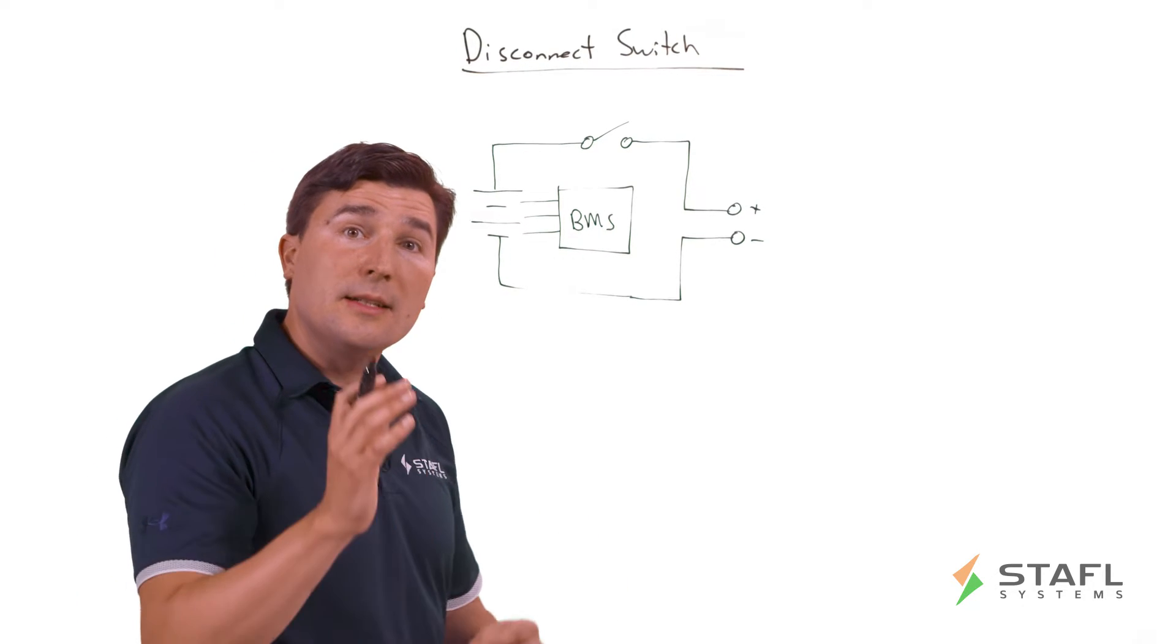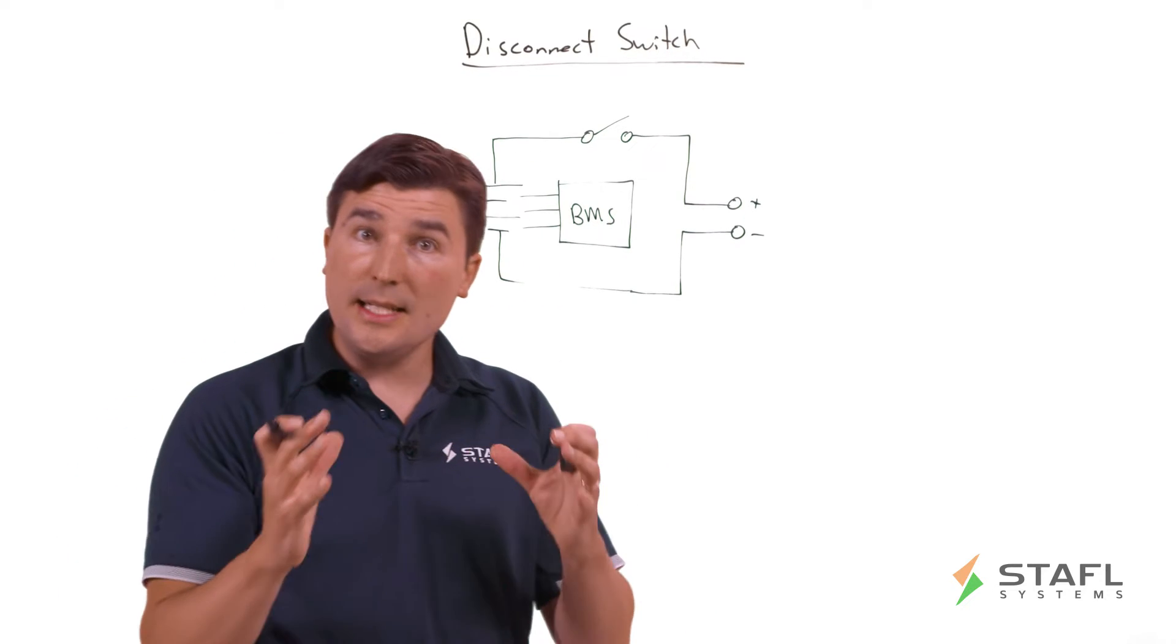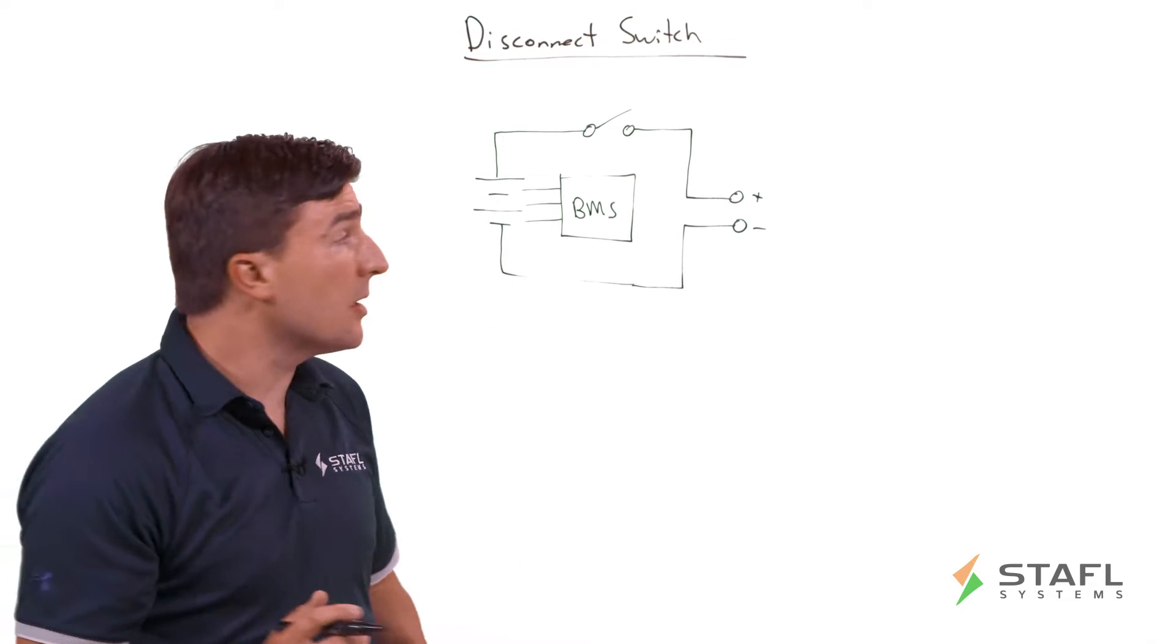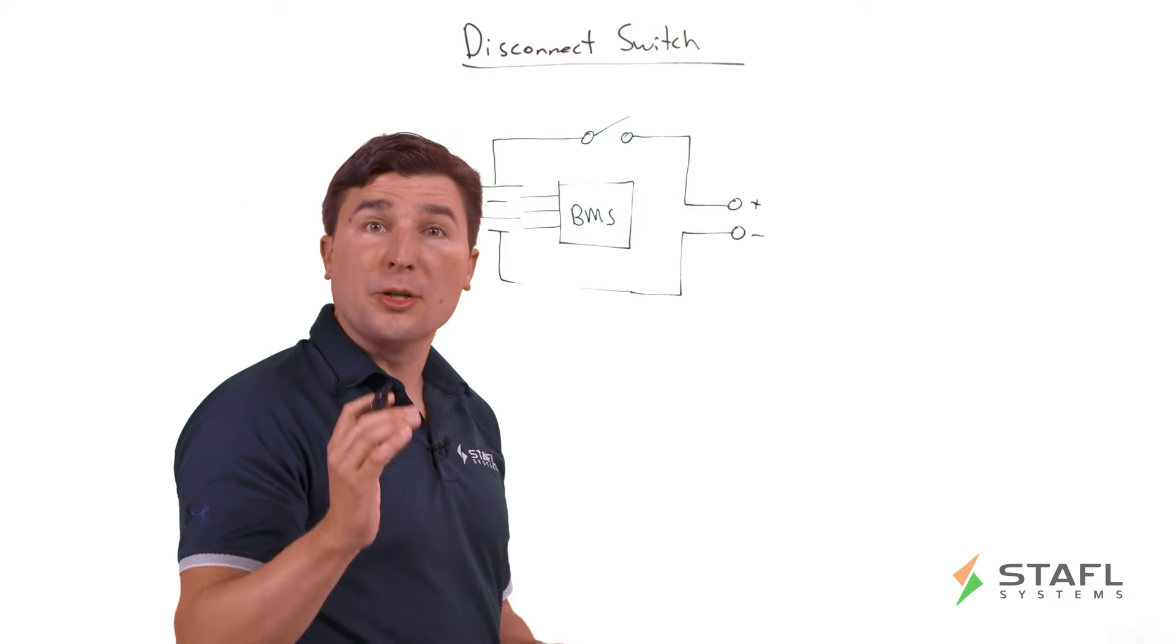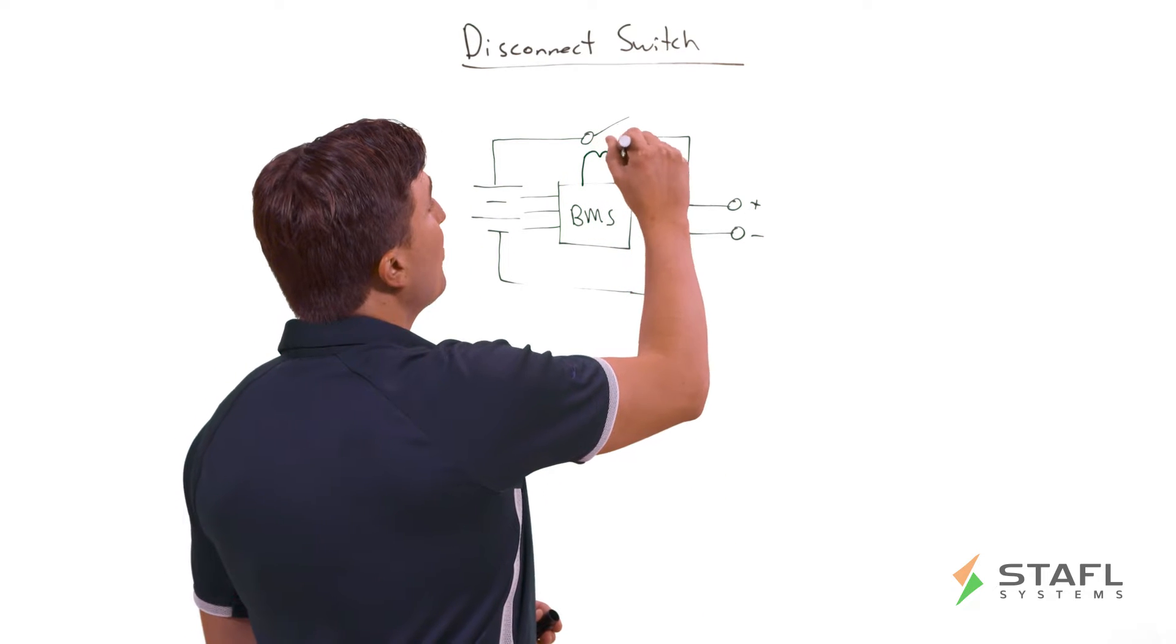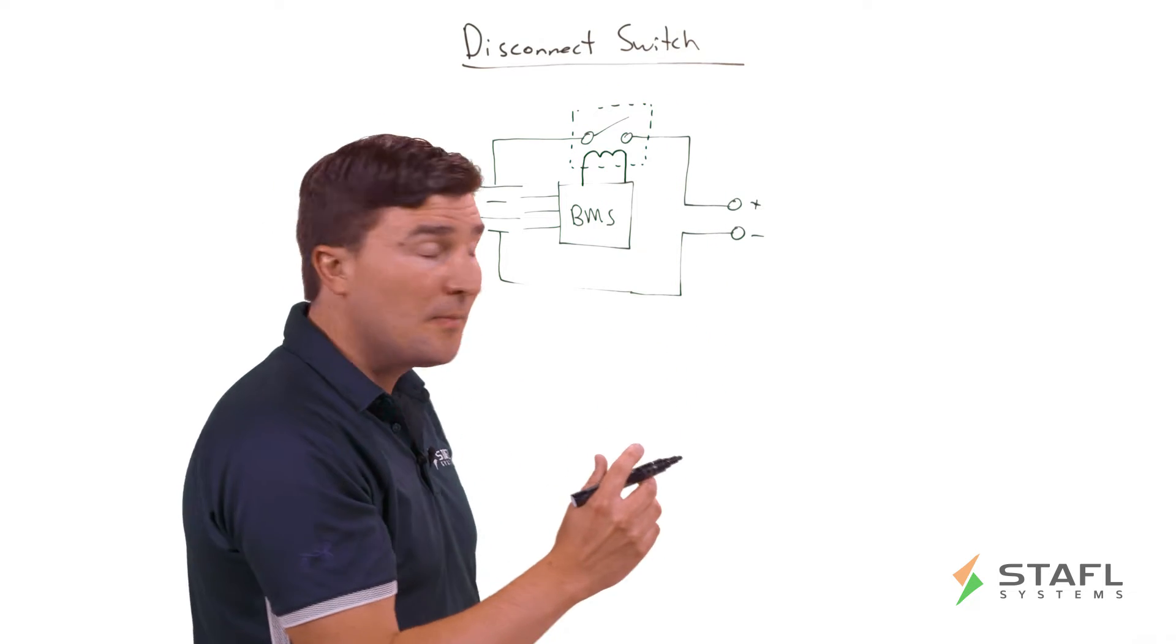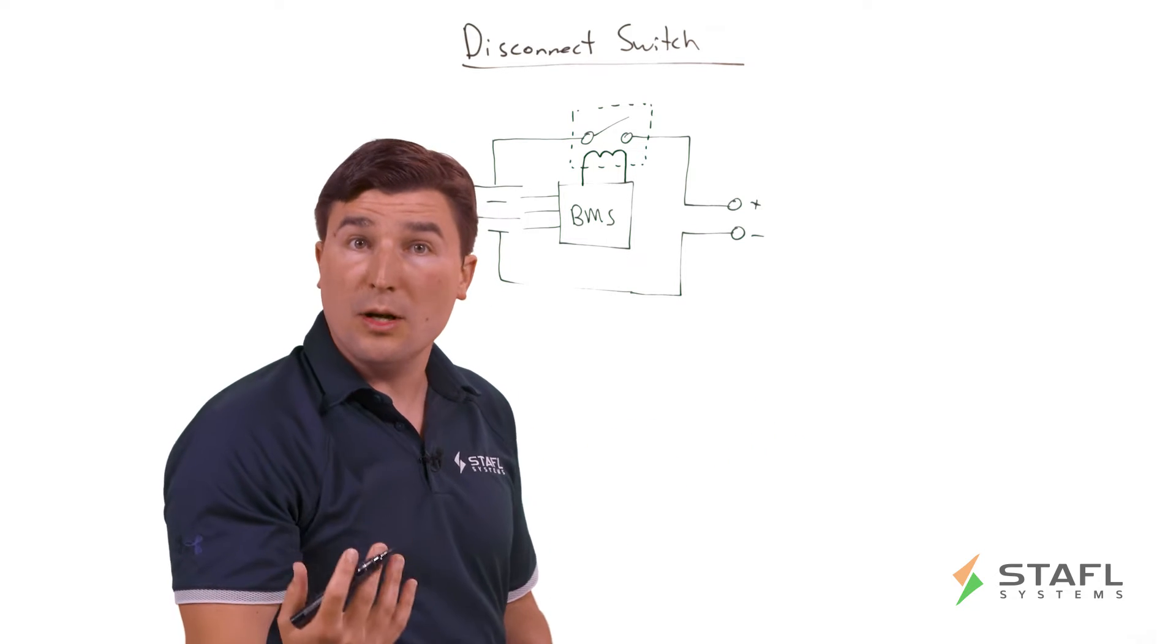If the BMS decides or determines that the battery pack is starting to exceed that safe envelope, for example, say the cells are getting too hot or being overcharged, a very dangerous condition, it needs a means of stopping that from occurring or getting worse. And the way it does that is it controls a disconnect switch to prevent further current flow into the battery pack.